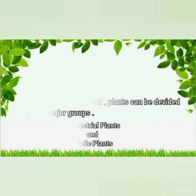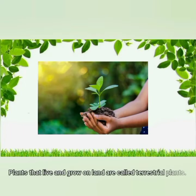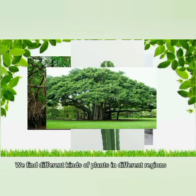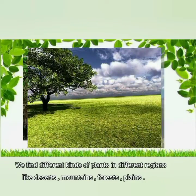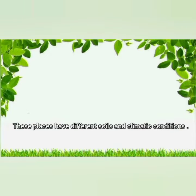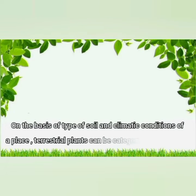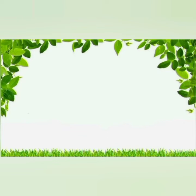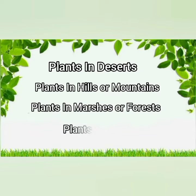According to their habitat, plants can be divided into two major groups: terrestrial plants and aquatic plants. Plants that live and grow on land are called terrestrial plants. We find different kinds of plants in different regions like desert, mountain, forest, and plains. On the basis of types of soil and climate conditions, terrestrial plants can be categorized as: plants in deserts, plants in hills or mountains, plants in marshes or forests, and plants in plains.